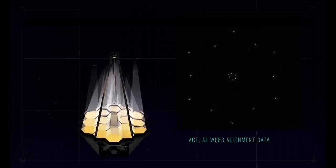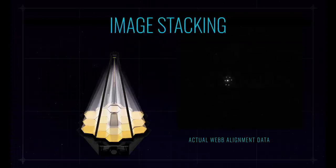We tilt the mirror segments to bring the light from each mirror so that it falls on top of each other at a common point in the middle of the detector. And we call that image stacking. And that concentrates all the light in a single place.